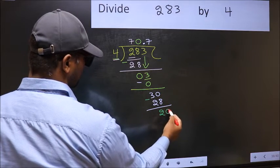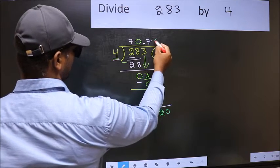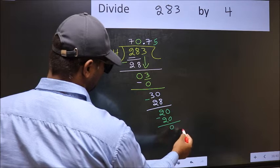We already have decimal, so directly take 0. When do we get 20 in 4 table? 4 times 5, 20. Now, you subtract. You get 0.